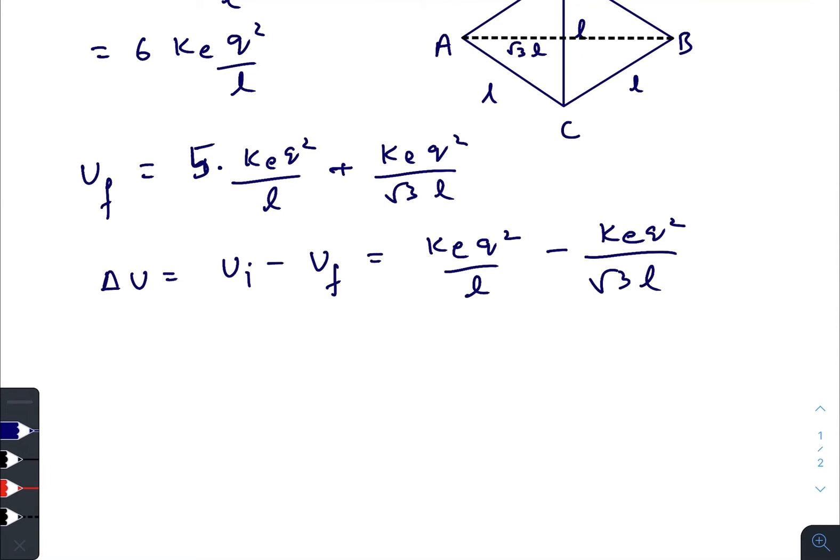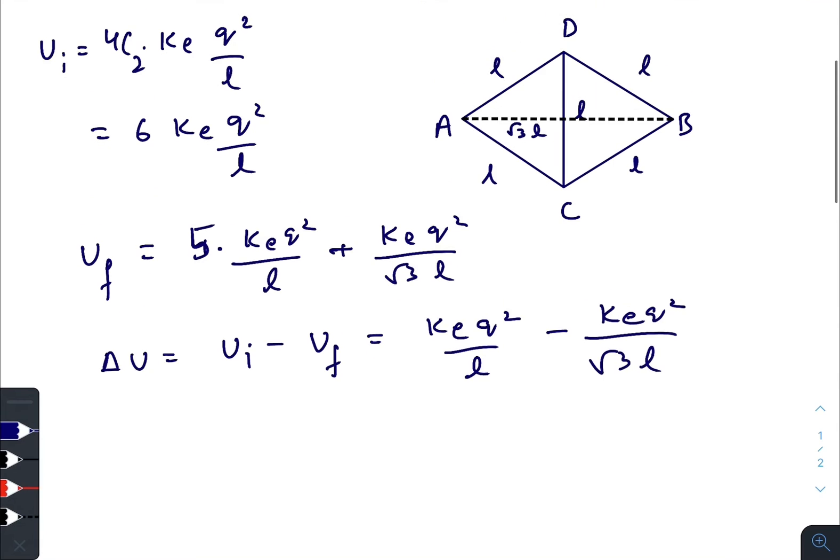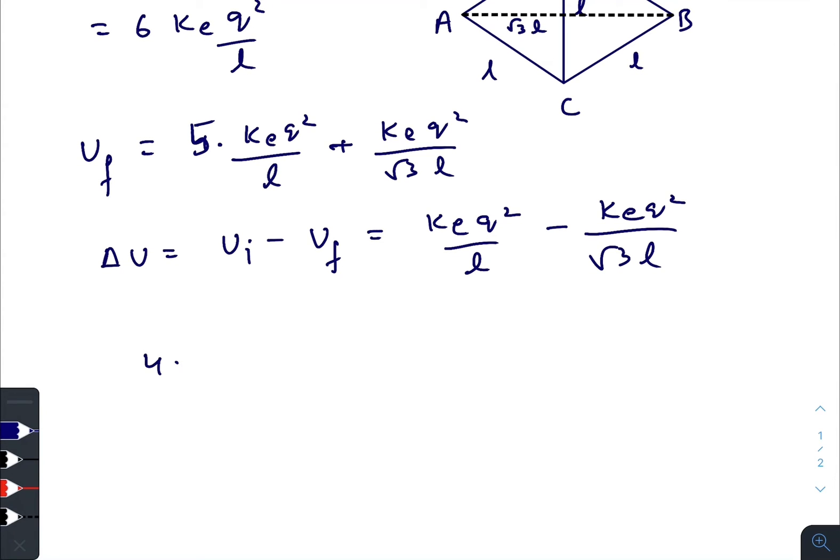So it is equally distributed among the four particles. So 4 times half m v max squared will be equal to ke q squared, 1 minus 1 by root 3. So v max will be, there is a 2,